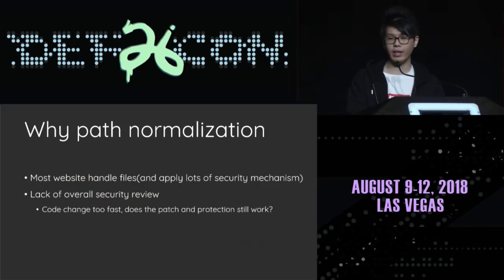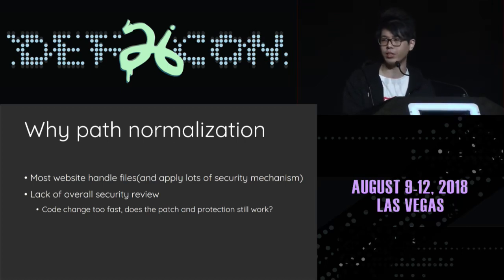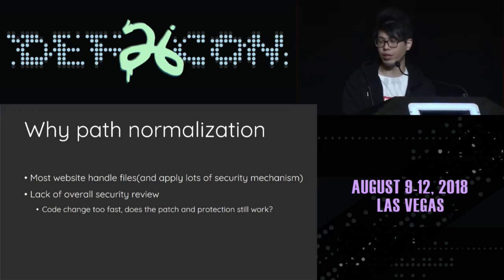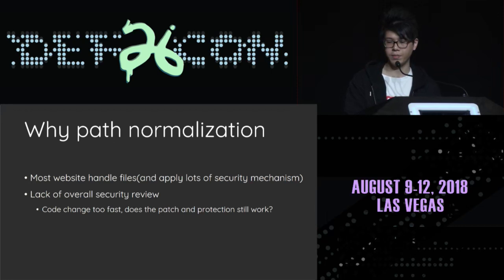So back to our topic — why I target path normalization. Because most websites handle files. Path traversal is an old problem in many web applications, but it's also a problem with lots of protections and bypasses. As mentioned, there are lots of dangerous patterns, so if you can find the difference between the check and the use, you can bypass the protection. Another reason is that in large projects, the code changes too fast and lacks an overall security review — for new commits, is there any side effect or bypass of existing security mechanisms? Who knows?